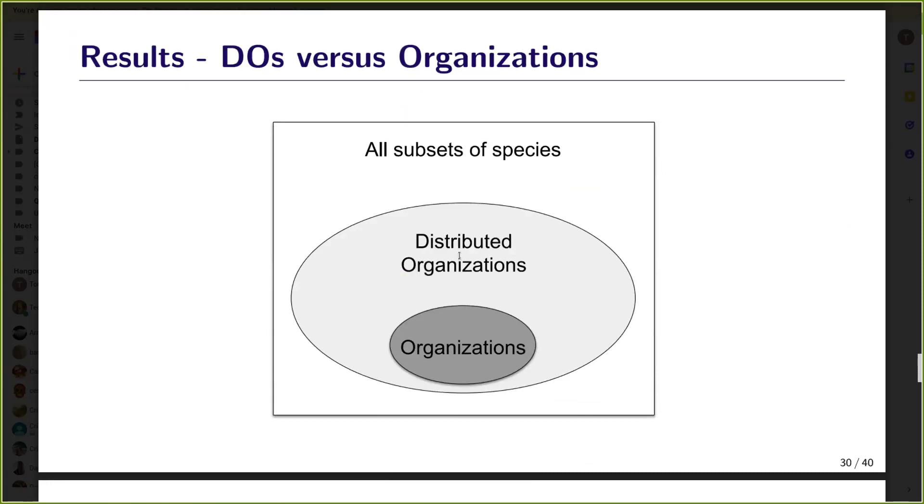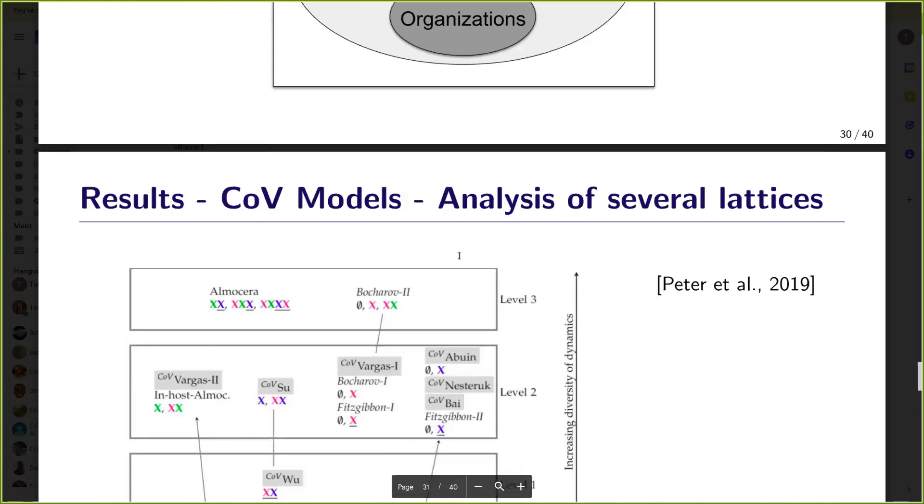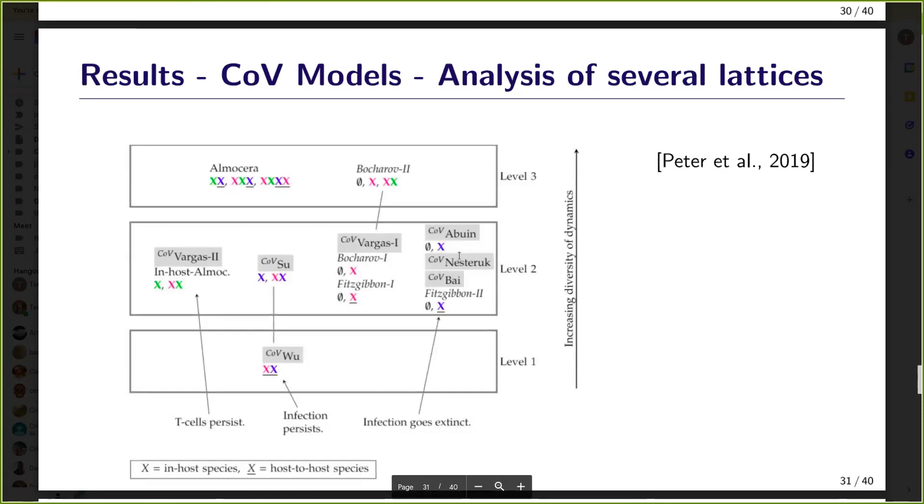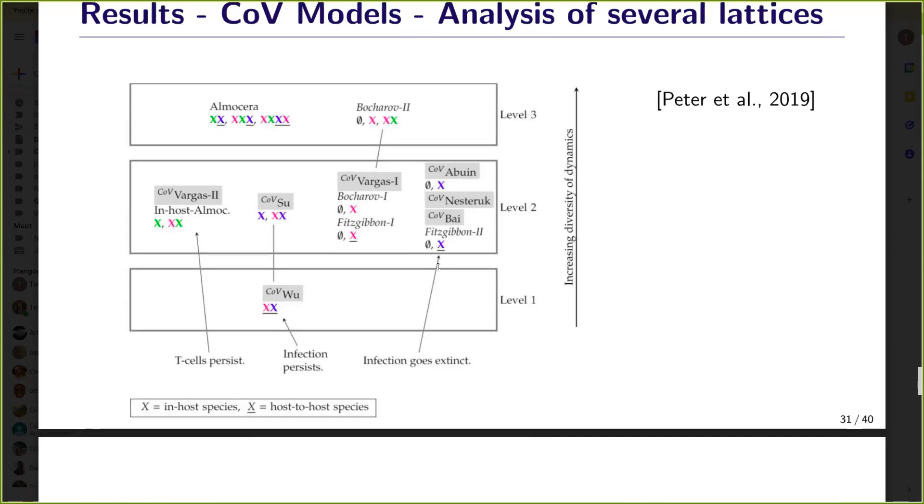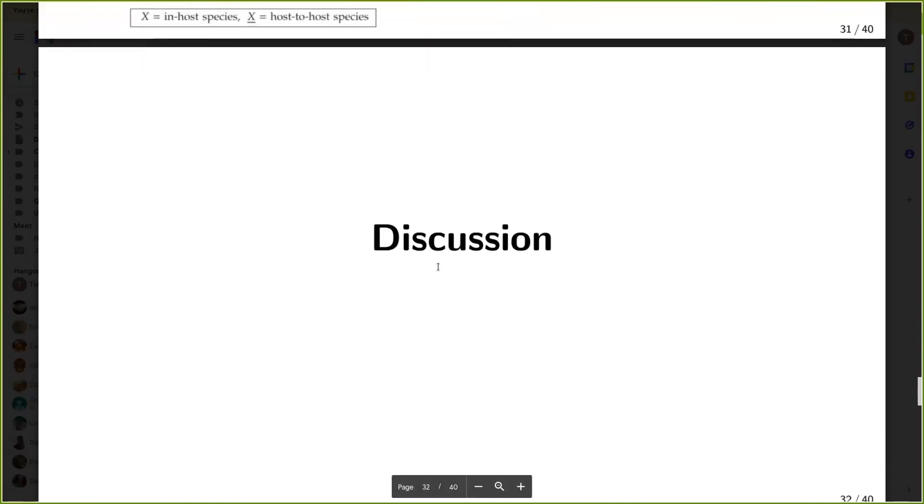We have also proven that it is always a lattice. This is a nice algebraic result and maybe it facilitates the computation of DOs. Also in this example, we find with our theory all these subsets of species together are a DO and they are persistent. But for example, the subset containing all three species is not persistent. If you wait long enough, you won't find a moment when all three species are in the cell or in the vehicle. Here we extended the system a bit to give a nice example of persistence.